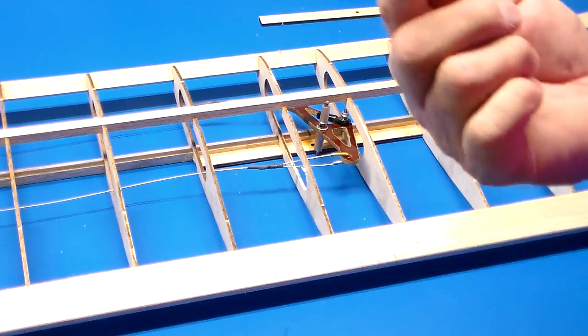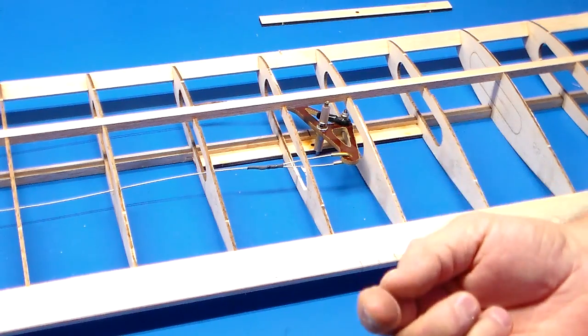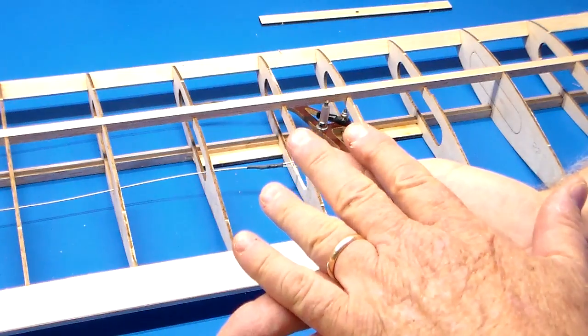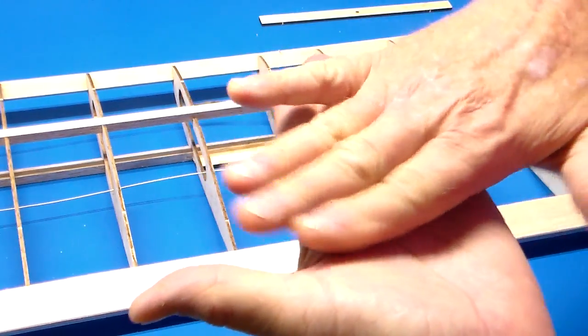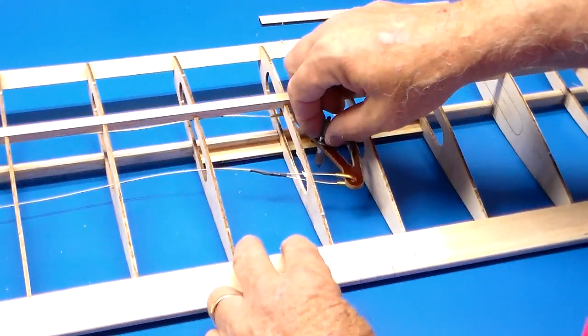Then you would bring a 6-32 bolt up through the bottom, maybe put another washer and a nut, and then put your Sig nylon bell crank on that, put a nut on top of it, and the bell crank just sort of sat on the plate and swiveled. A suspended bell crank is an entirely different thing.